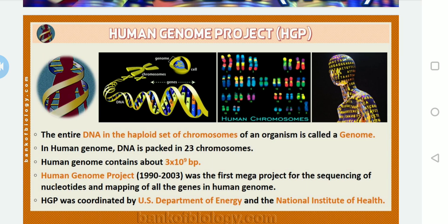The human genome contains about 3 × 10⁹ base pairs across those 23 chromosomes. The Human Genome Project, which began in 1990 and was completed in 2003, was the first mega project for the sequencing of nucleotides and mapping of all the genes in the human genome.